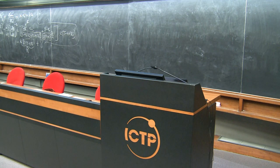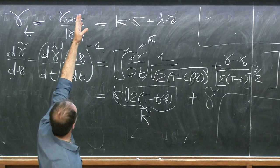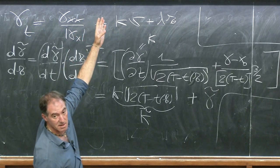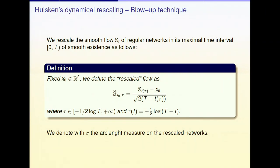We want to take some limit when tau goes to plus infinity, at least on a sequence, of this rescaled flow. The shape of that limit tells us something about the network approaching the point x_0 as T approaches big T. The limit can be taken because we have enough compactness, given by the estimates I mentioned yesterday.